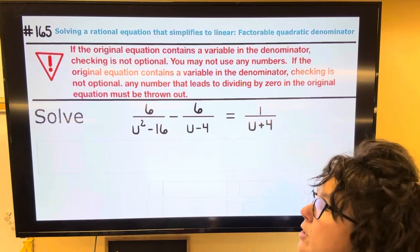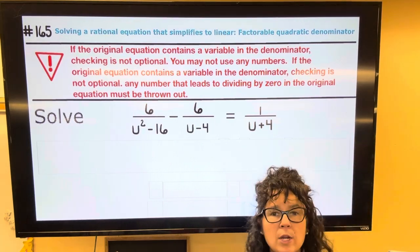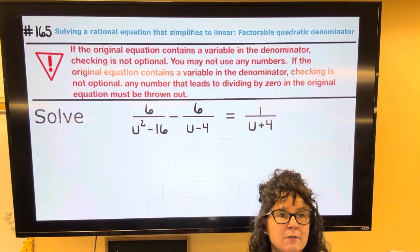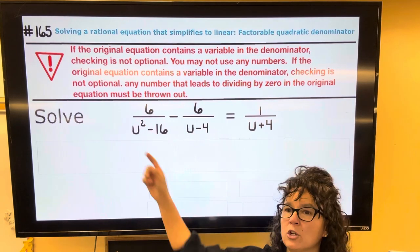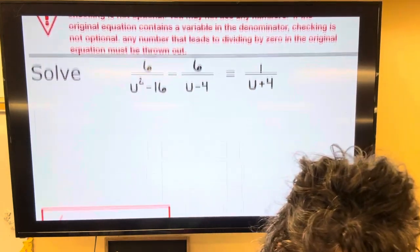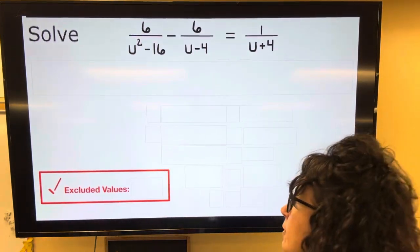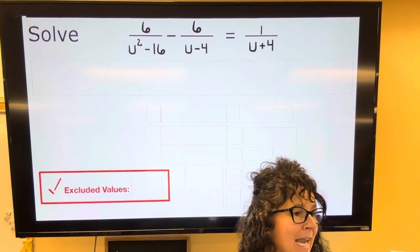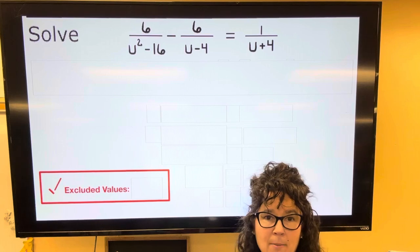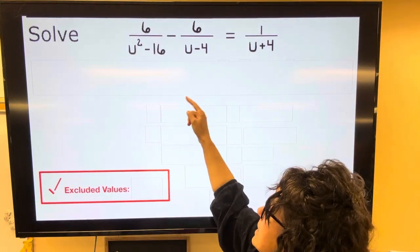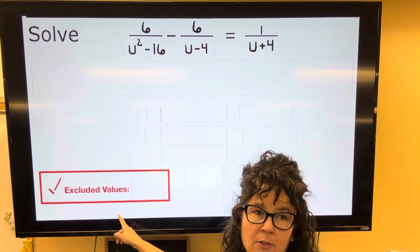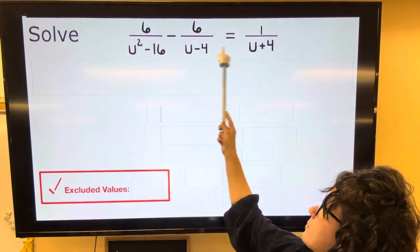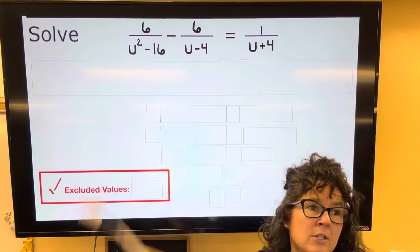We just learned about excluded values and so we are not able to use any number that would lead me to dividing anything in the original by zero. So before I start even solving this equation, I want to have the numbers that cannot be answers in the back of my mind. Let's go ahead and do one step before I decide on those excluded values. So step one is we're going to factor the denominators.